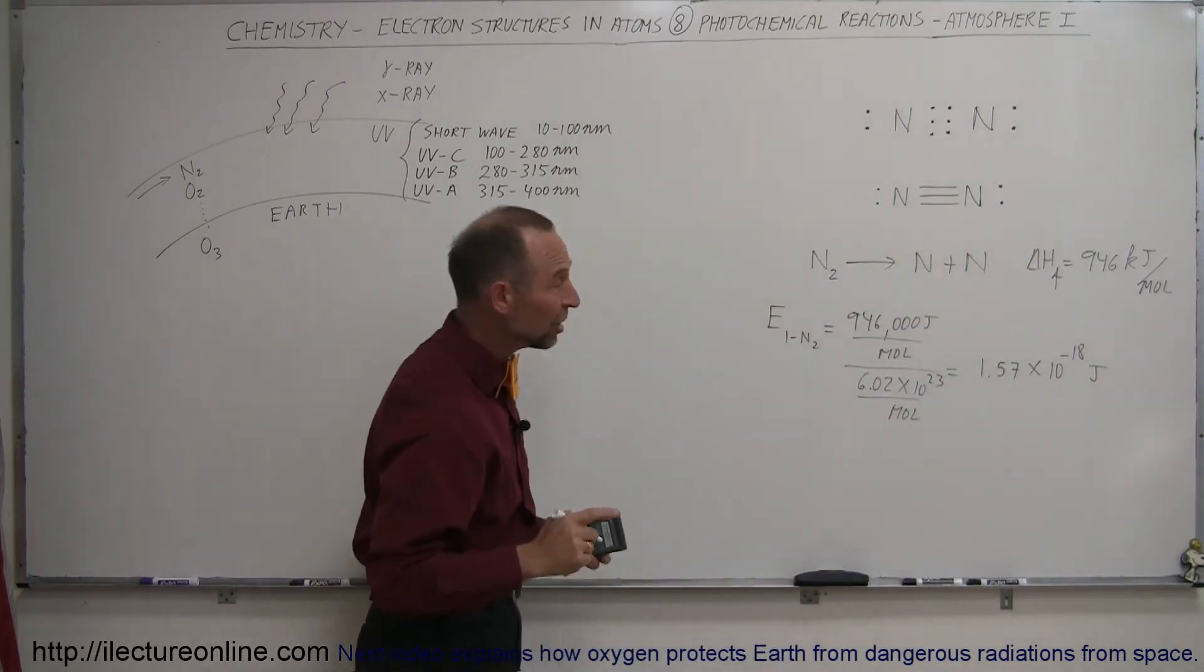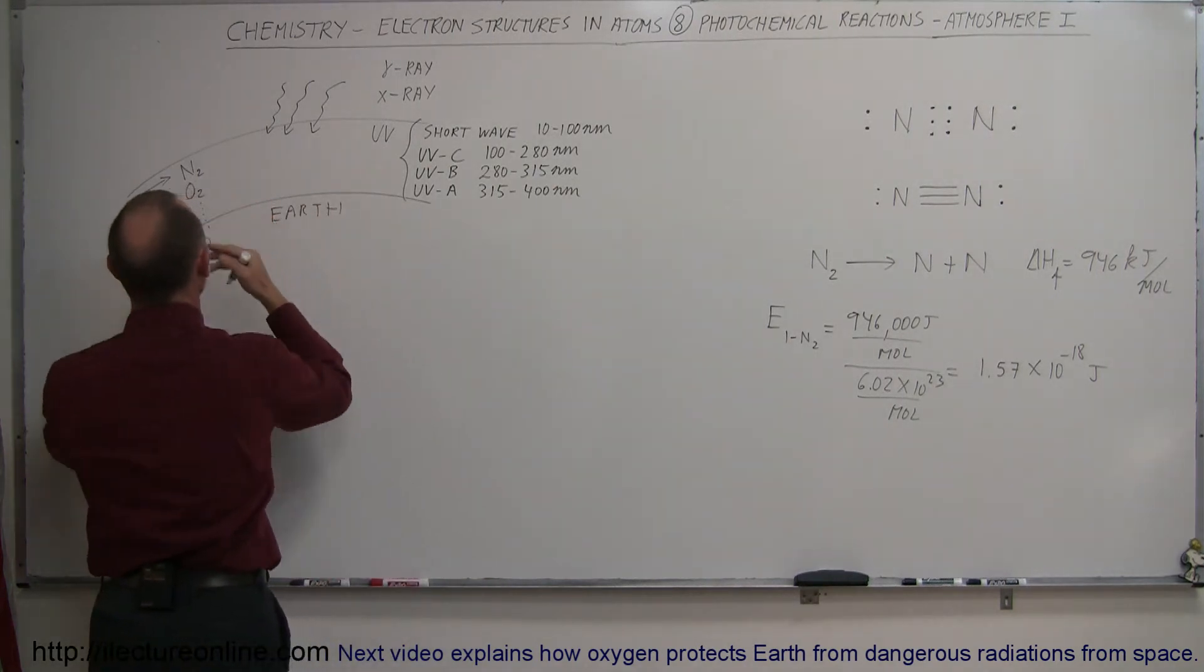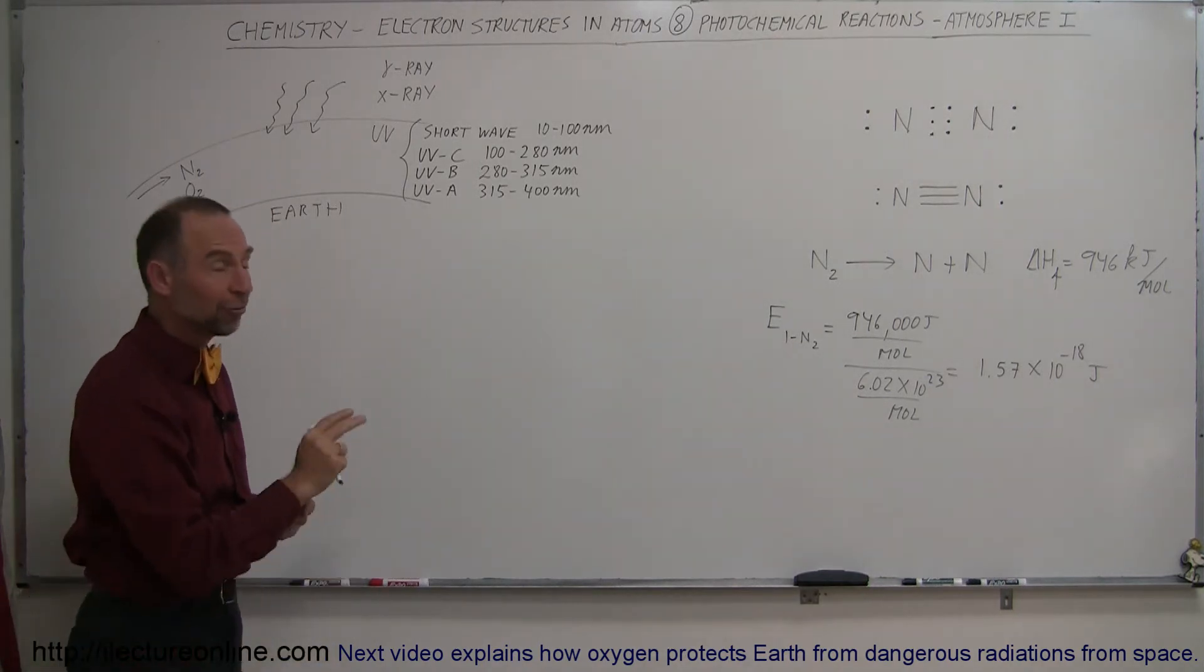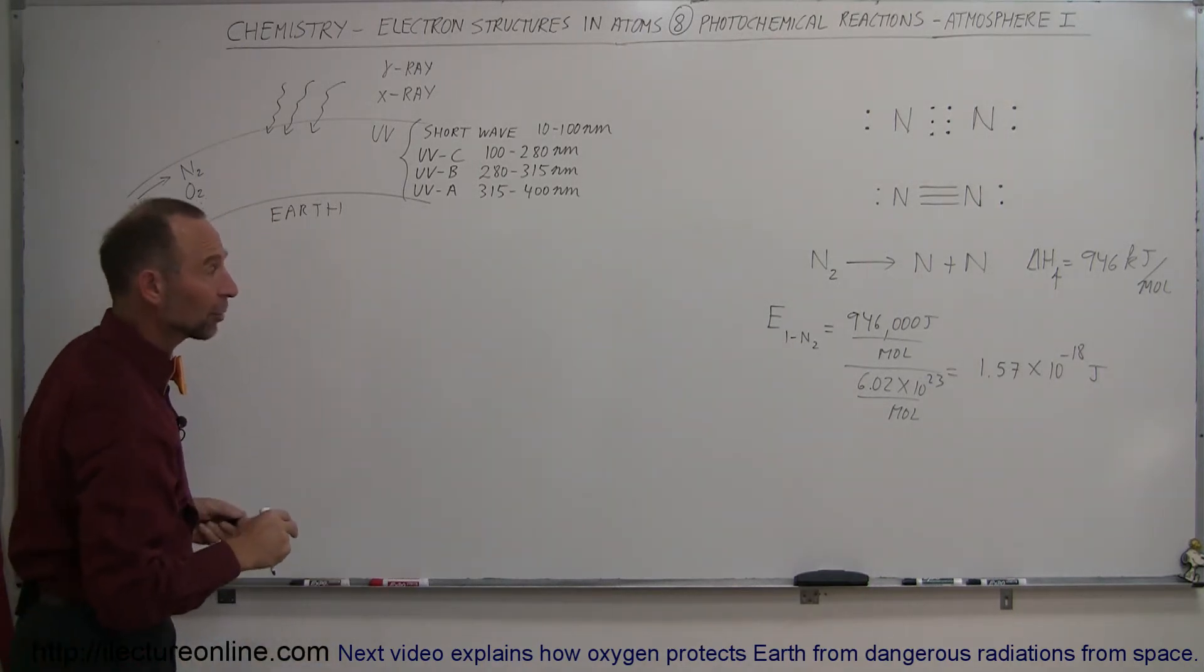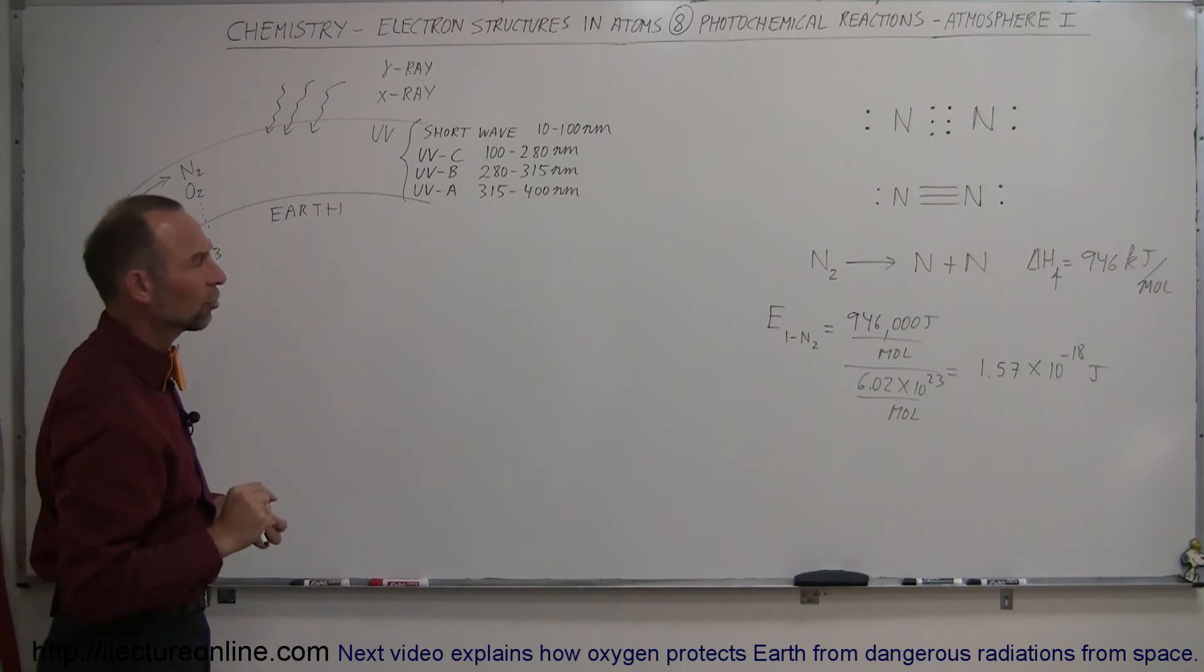We get a total of 1.57 times 10 to the minus 18 joules. That's the amount of energy you require, the quantum of energy, to come in and split up a single nitrogen molecule. That's really important for us. If nitrogen molecules weren't triple bonded molecules needing that kind of energy to dissociate, we may not be able to live on Earth.